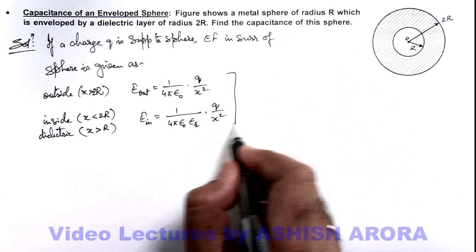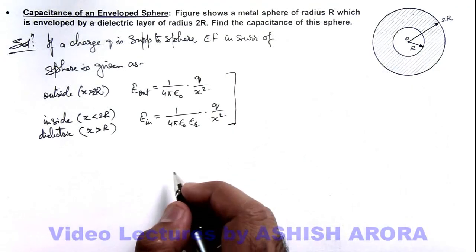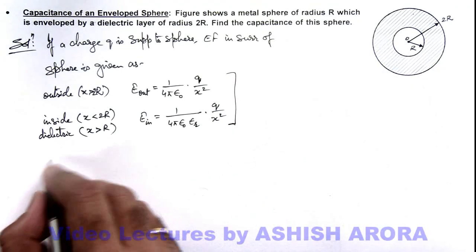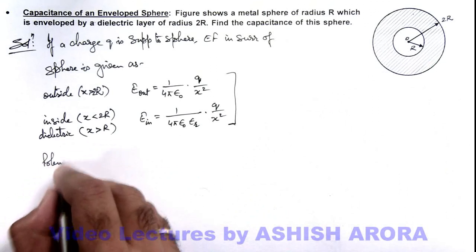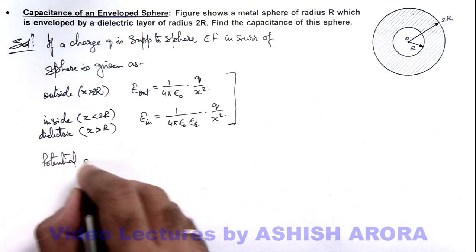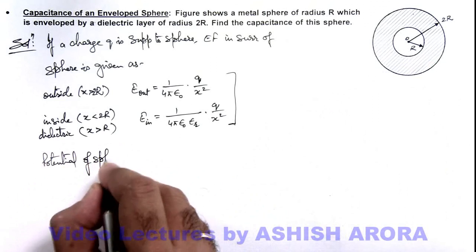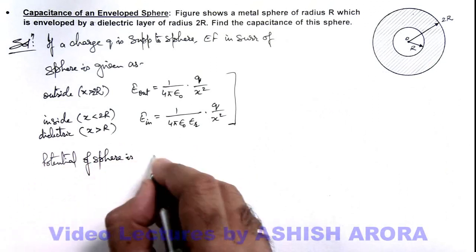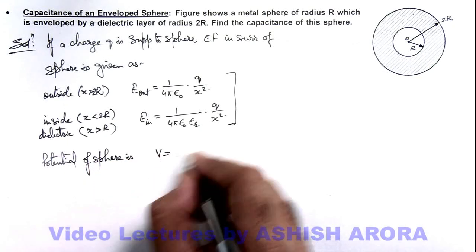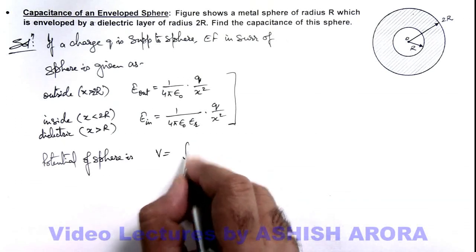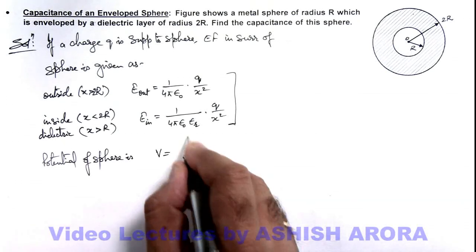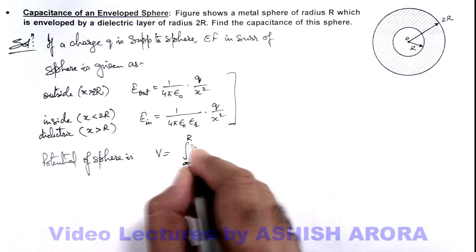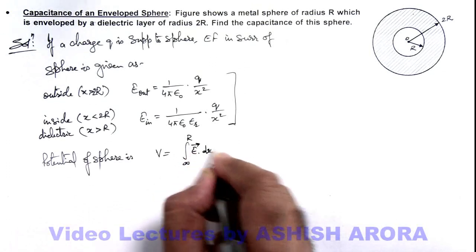Now using these electric fields we can find out the potential of the sphere, which can be given as: here we can write potential of sphere is V. And this is actually integration from infinity to R, E dot dR or E dot dx.